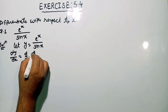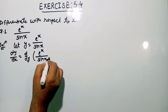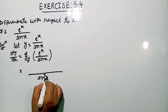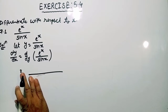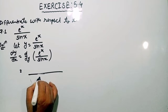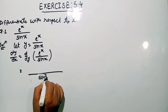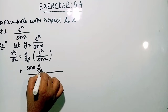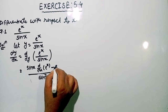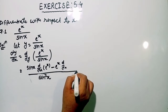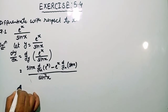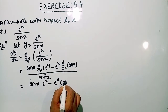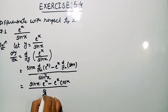So dy by dx of e raised to the power x by sin x. Now here applying the formula of quotient rule. The denominator will be sin x whole square. Sin x will be constant, so differentiation of e raised to the power x, then e raised to the power x will be constant and differentiation of sin x. Differentiation of e raised to the power x is e raised to the power x, and differentiation of sin x is cos x, divided by sin square x.